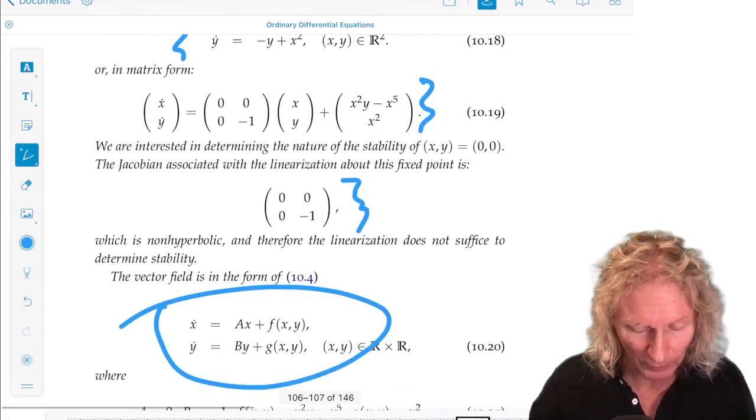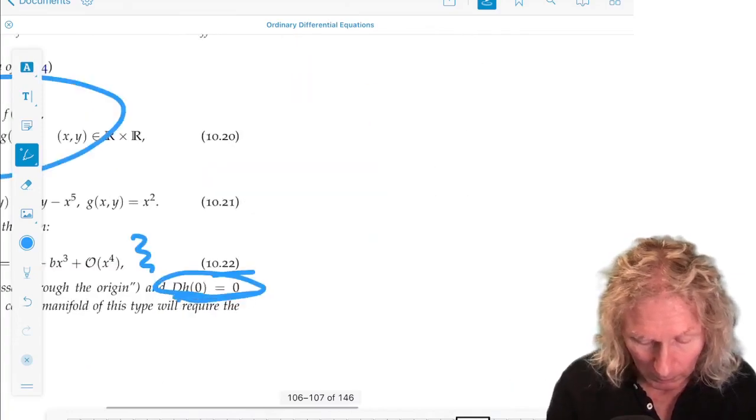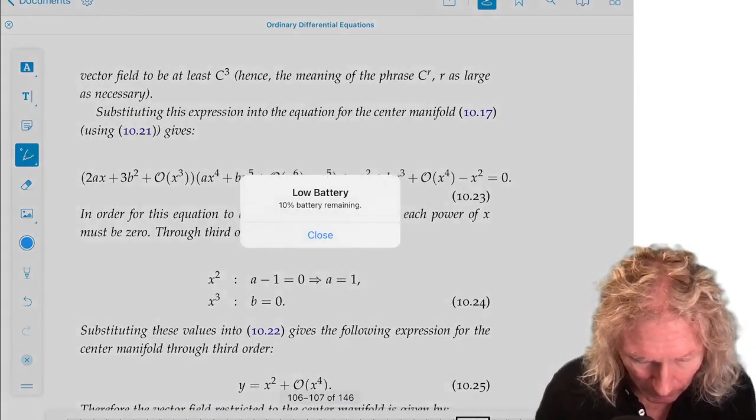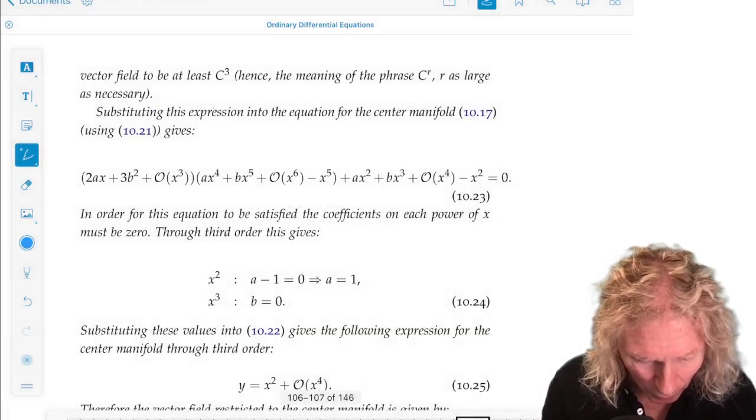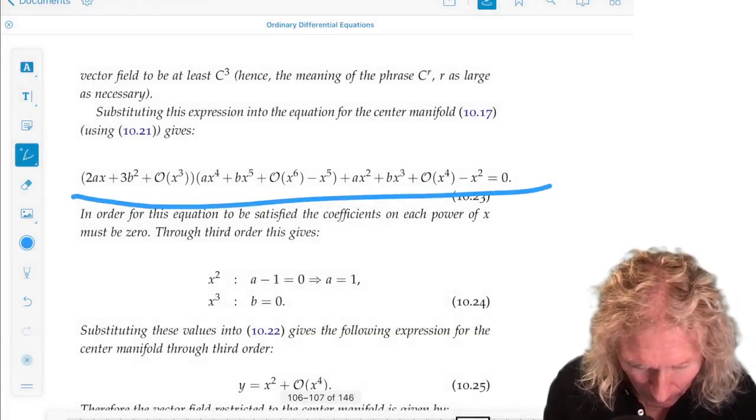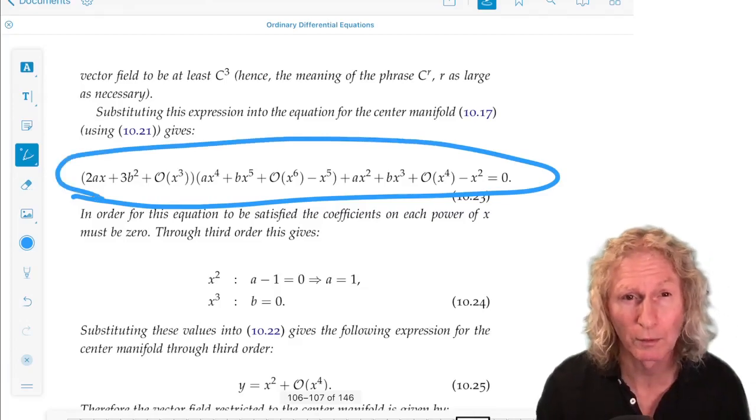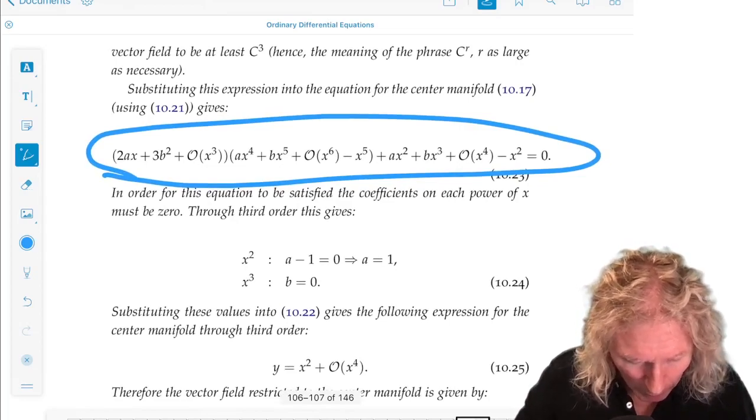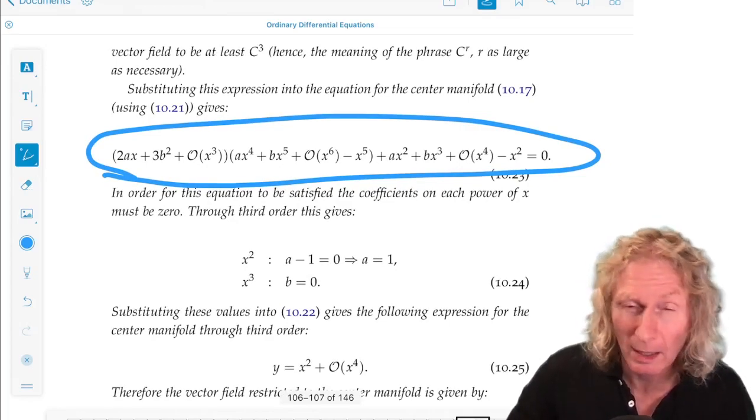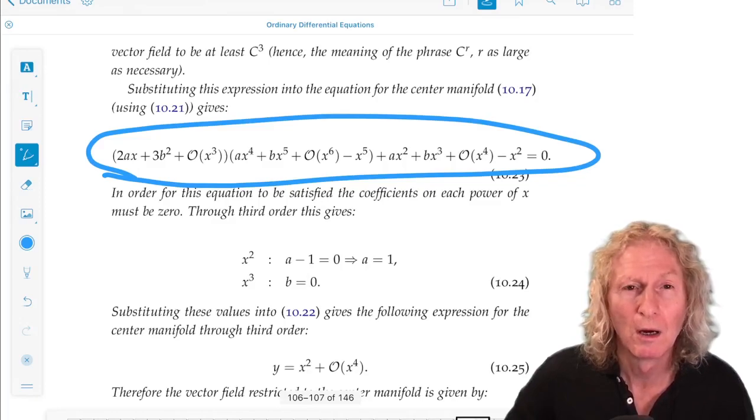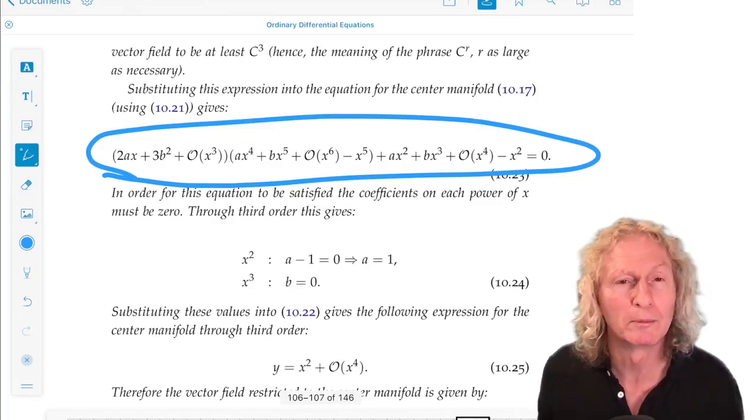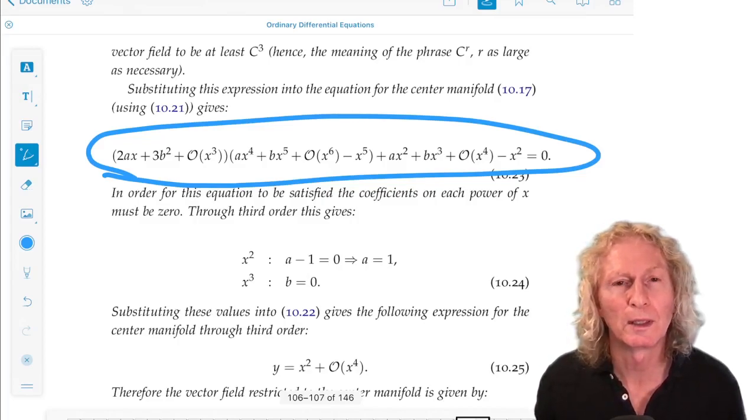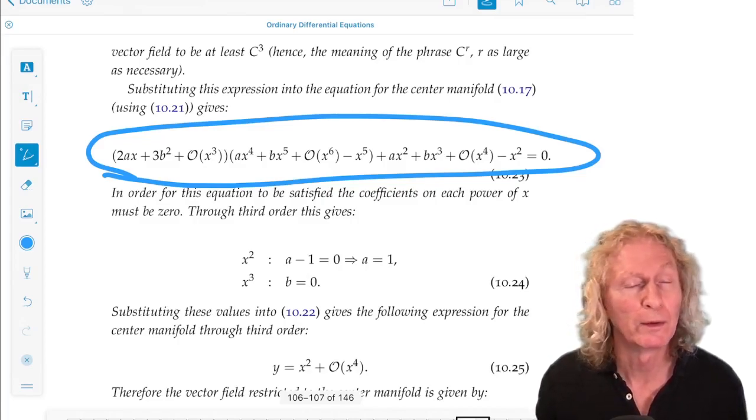But this example wasn't in standard form. So, I plug that equation into the center manifold equation, and I multiply everything out and balance the coefficients on the different terms. We have a power series, and so if it's going to equal zero, the coefficients on each power have to vanish.